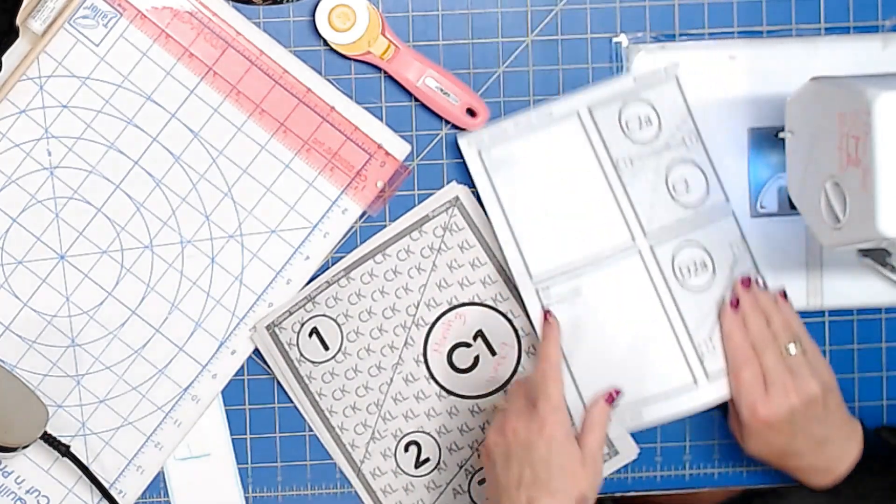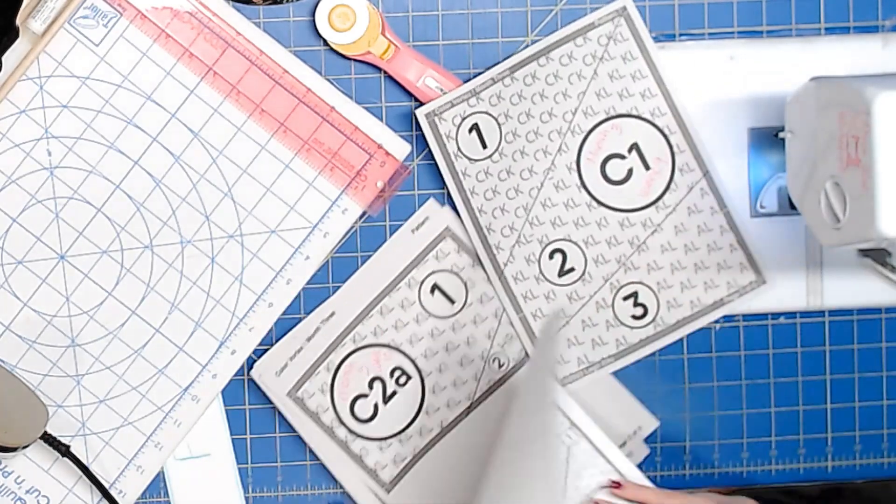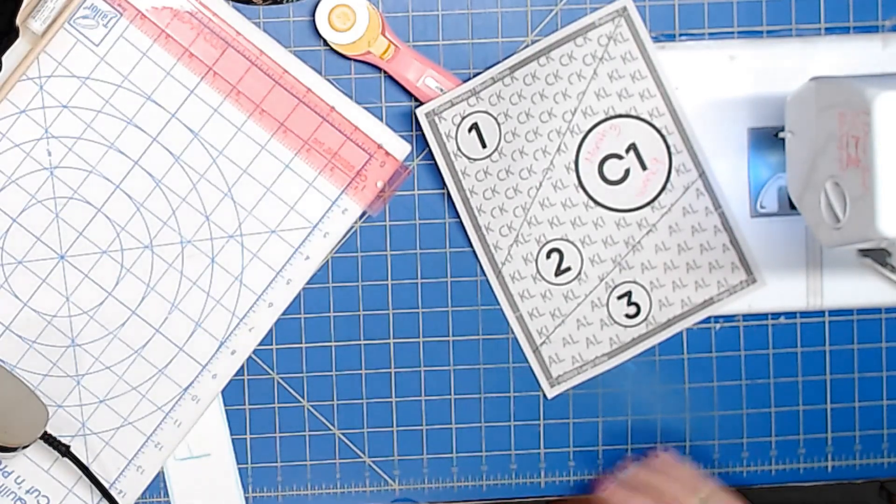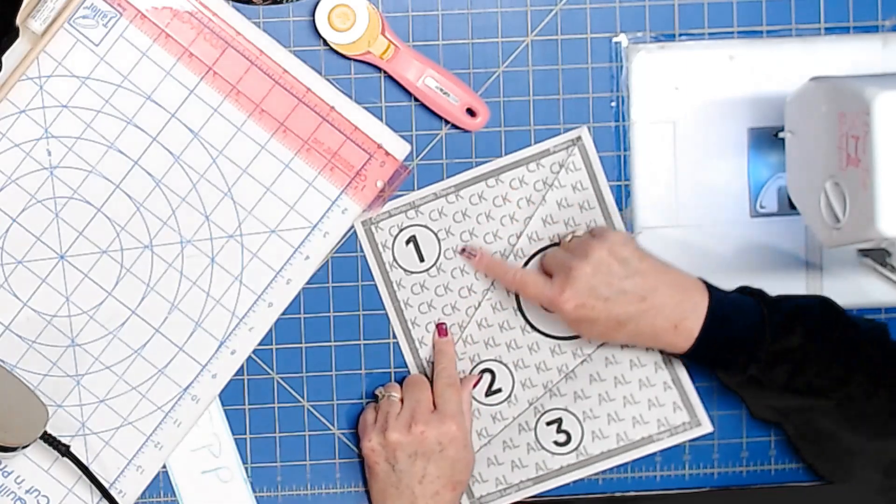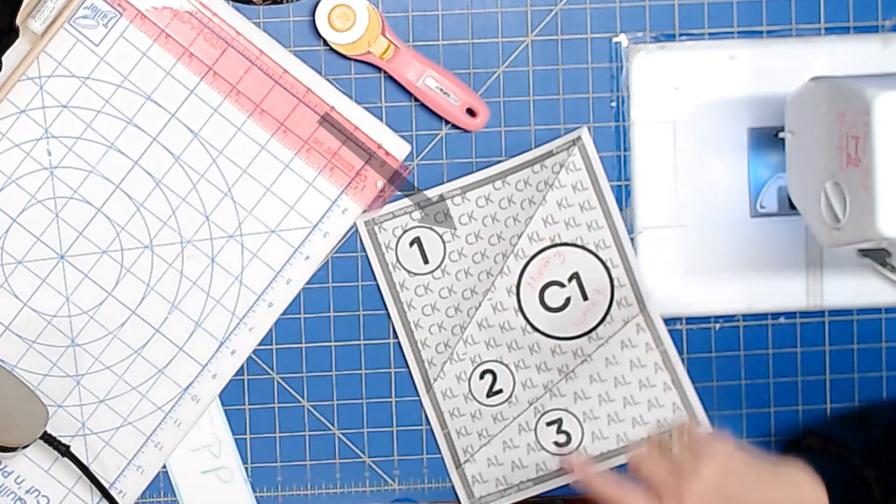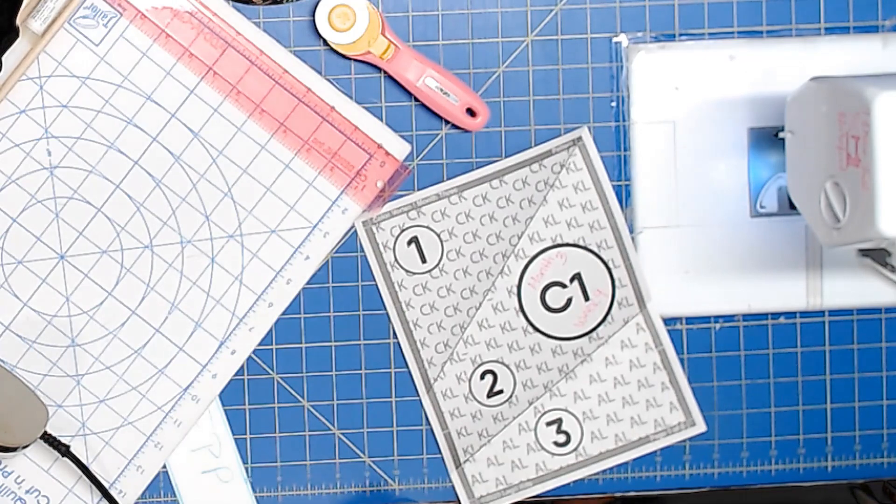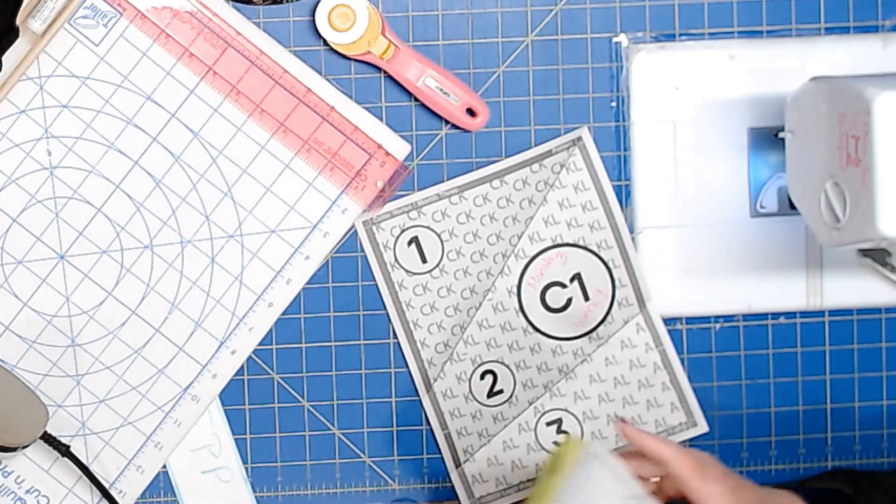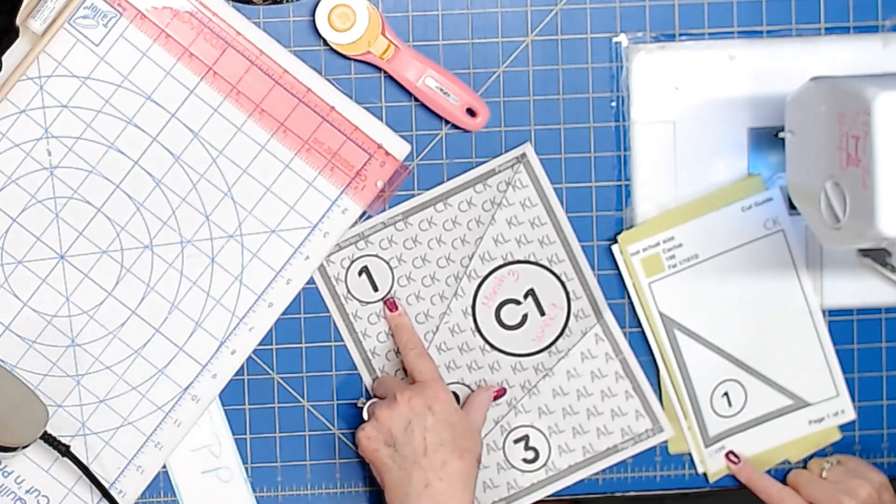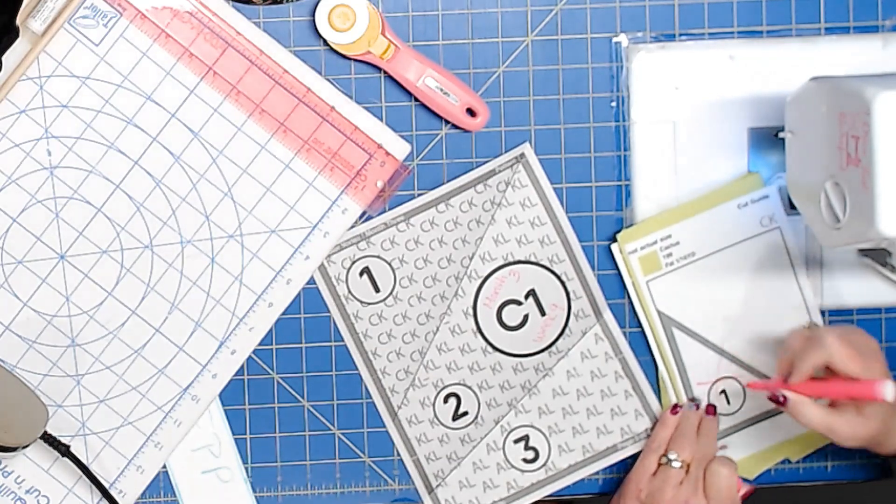We are going to start with C1. Right here is what we're going to do. Your first color is going to be CK and if memory serves me right that's cactus, so we've used that color before. I'm going to pull it out, match my cutting guide C1 block one and mark that off. This is going to be a one cut wonder this go around.